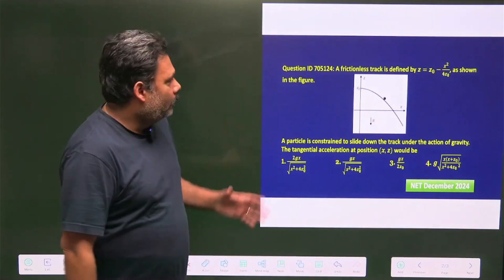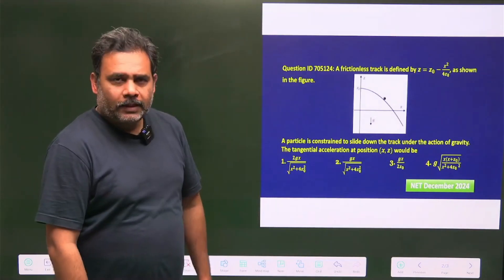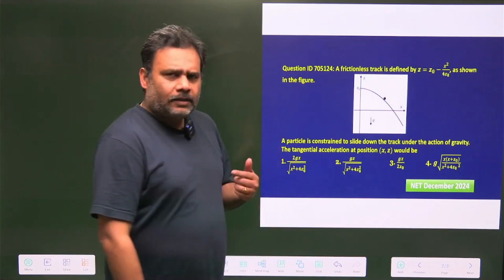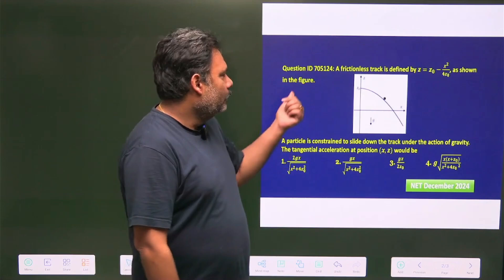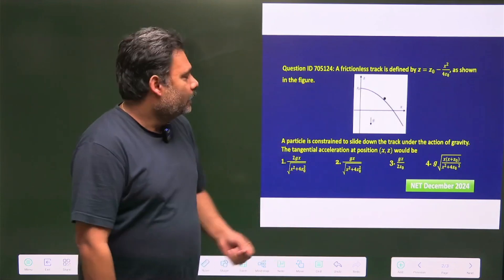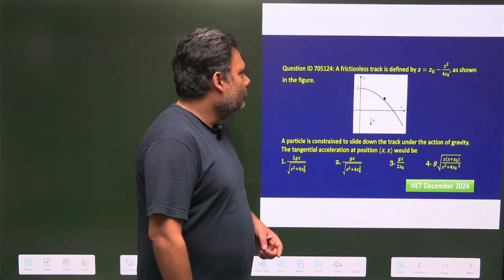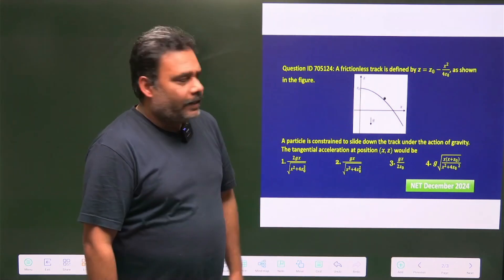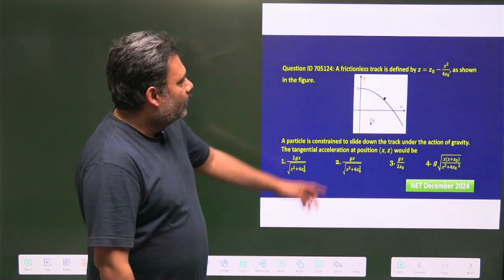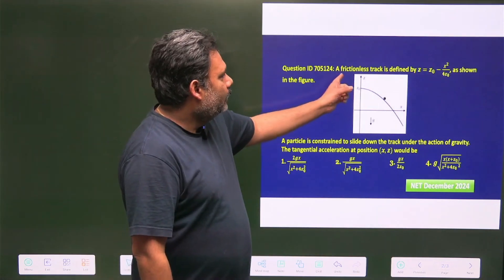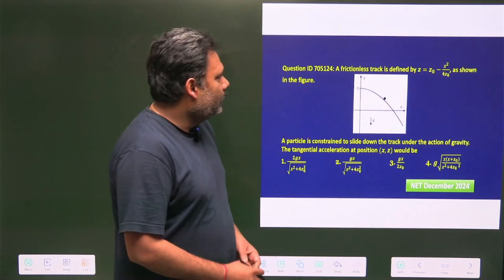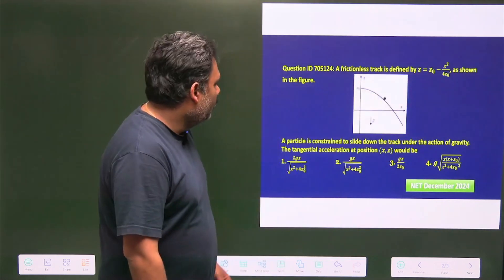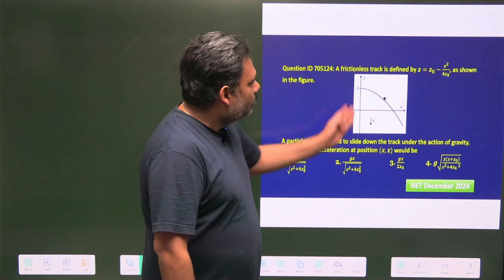Let's try to solve one very beautiful problem from CSIR NET December exam. This exam was held in March 2nd and the question ID is 705124. It's from mechanics and it's a wonderful question. There is a frictionless track is given, this track which equation is given that is parabola. A particle is constrained to slide on this particular track under the action of gravity.